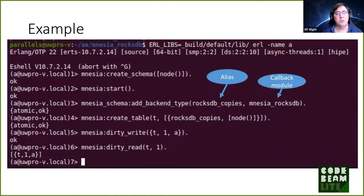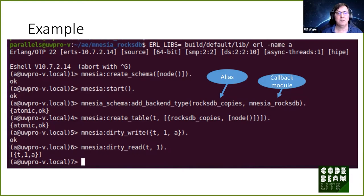The way you would use a back-end plug-in: you create an Mnesia schema, start Mnesia, and then add a back-end type where you provide an alias — for example, 'RocksDB copies' — and a callback module, which would be 'mnesia_rocksdb.' Then you create a table providing the types, and in this case you use the RocksDB copies alias on the local node. You can then start using that just as any other Mnesia table.